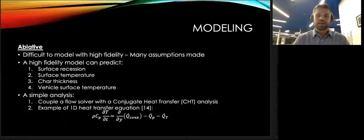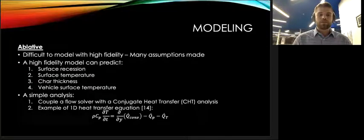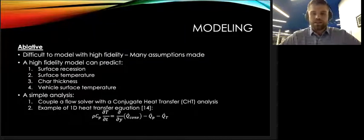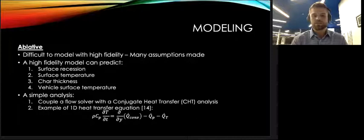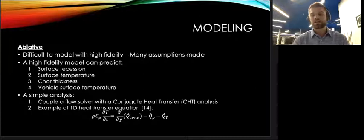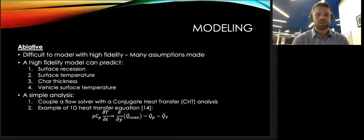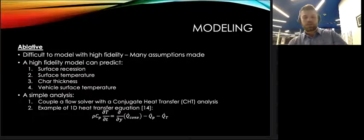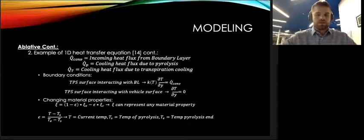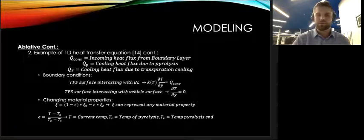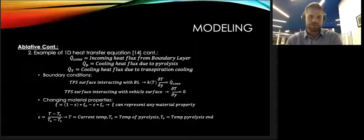I found a simple 1D analysis that I went through. I'm going to explain it here now. This research paper coupled a flow solver, the DSMC solver, which is a way to obtain free stream quantities of a rarefied flow using the Boltzmann equation, with a conjugate heat transfer analysis. You can see the 1D heat transfer equation below. It includes a transient term and then one incoming flux and two outgoing. Those fluxes are explained here. We've got the convective flux, the heat flux due to pyrolysis, and the heat flux due to transpiration cooling.